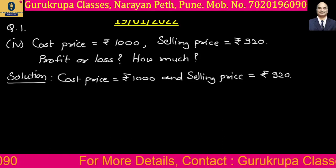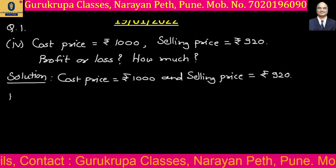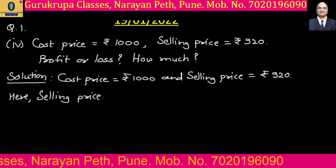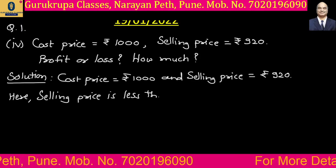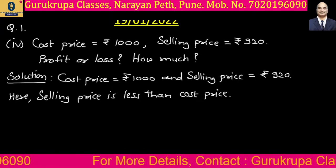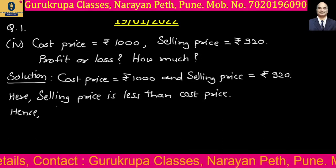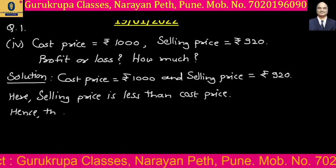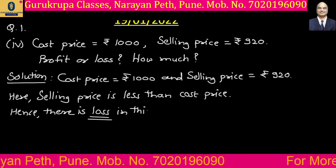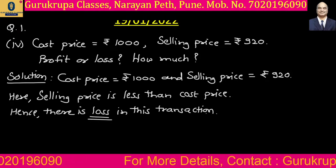Now if you observe these two prices — cost price and selling price — you observe that the selling price is less than cost price. So that fact you have to write down here: selling price is less than cost price. So in this case there is a loss. Therefore, there is a loss in this transaction. Profit or loss? Loss.